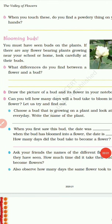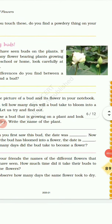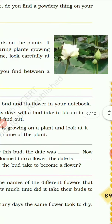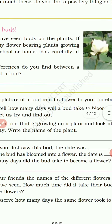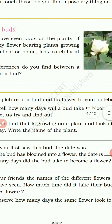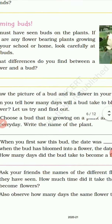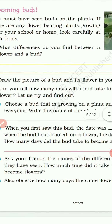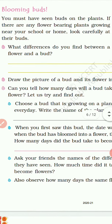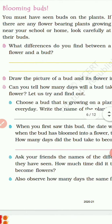Blooming buds. Here you can see in the picture there is a bud — there are two: one is a very small bud, one is growing, and one has grown into a flower. If there are any flower-bearing plants growing near your home, look carefully at their buds.